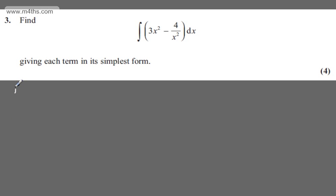I'm just going to rewrite this. We're looking now for the integral of 3x squared minus 4x to the power of minus 2 with respect to x. So we need to raise by power and divide by the new power.